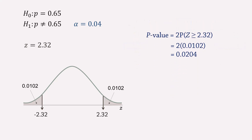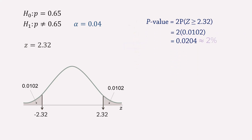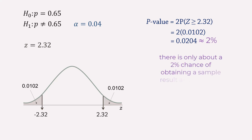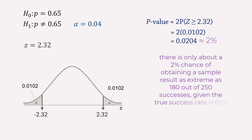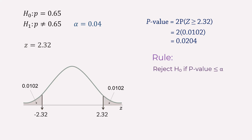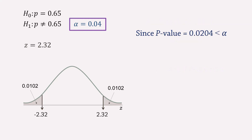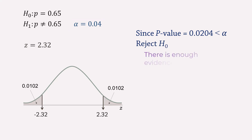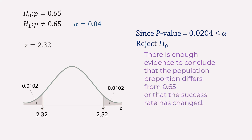So what does this tell us? It tells us that there is only about a 2% chance of obtaining a sample result as extreme as 180 out of 250 successes, given the true success rate is 65%. The p-value rule requires us to reject the null hypothesis if the calculated p-value is less than the significance level alpha. Since this p-value is less than an alpha of 0.04, we reject the null hypothesis and have enough evidence to conclude that the population proportion now differs from 0.65, or that the success rate has changed.